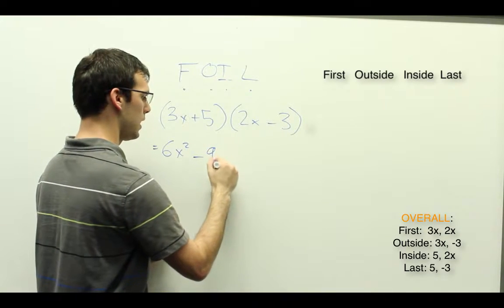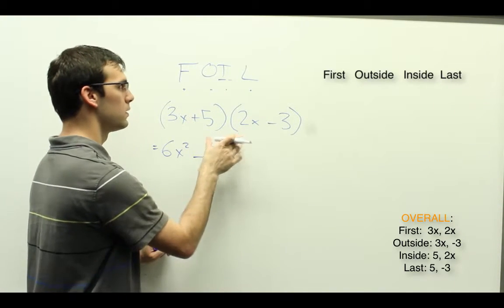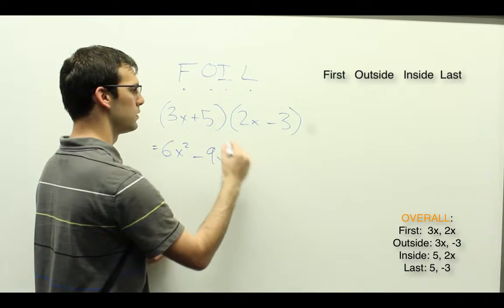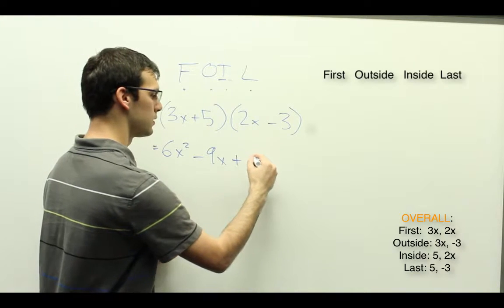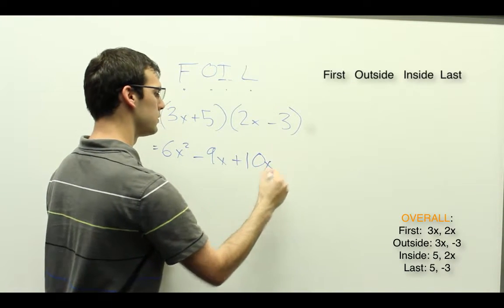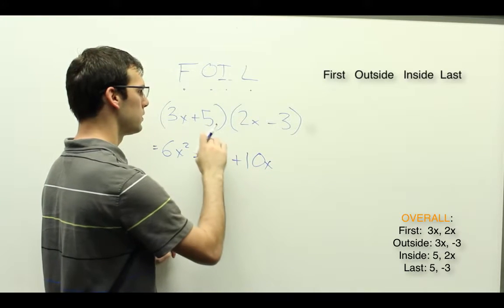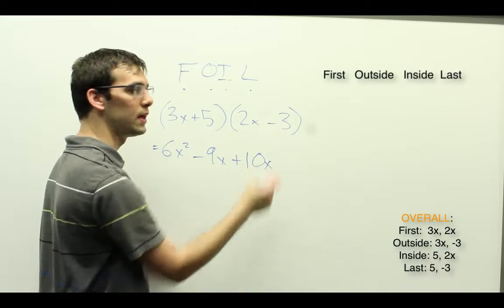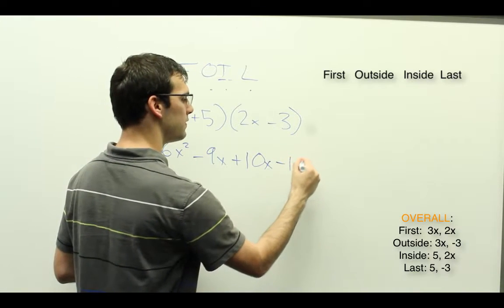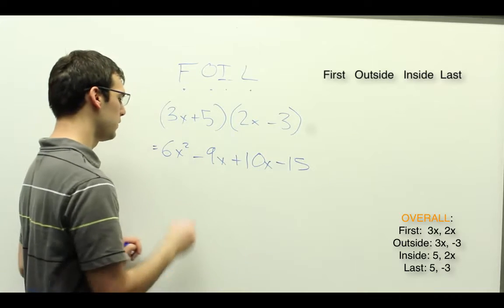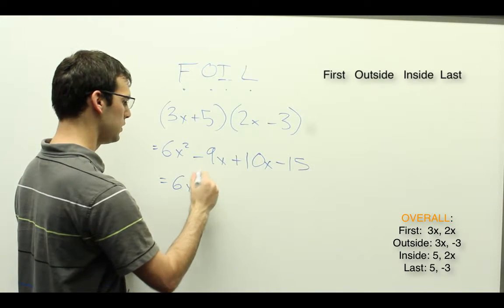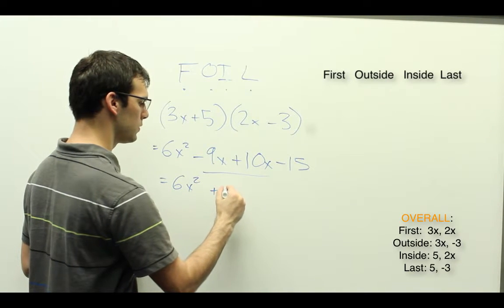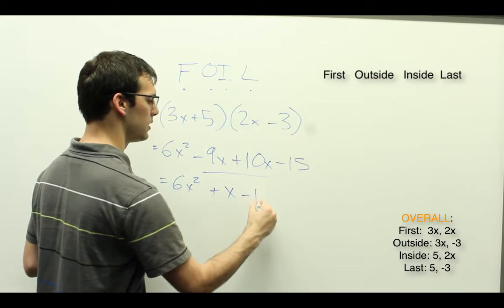Then the inside, plus 5 times 2X. And we finally do the last, which is plus 5 times negative 3, which is negative 15, so minus 15. And then we can combine these middle two terms. We have 6X squared plus 1X, so plus X minus 15.